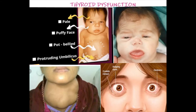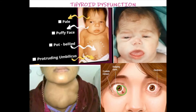Hyperthyroidism is caused by excess secretion of thyroid hormones. This condition is known as Graves' disease, also called exophthalmia. Symptoms include protrusion of the eyeballs, increased metabolic rate, high body temperature, profuse sweating, loss of body weight, and nervousness.